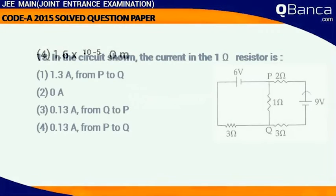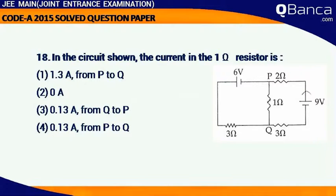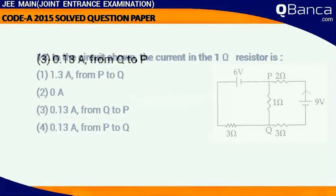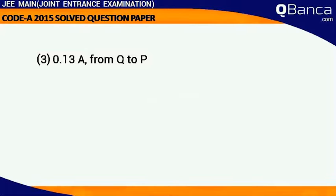In the circuit shown, the current in the 1 ohm resistor is answer 0.13 amp from Q to P.